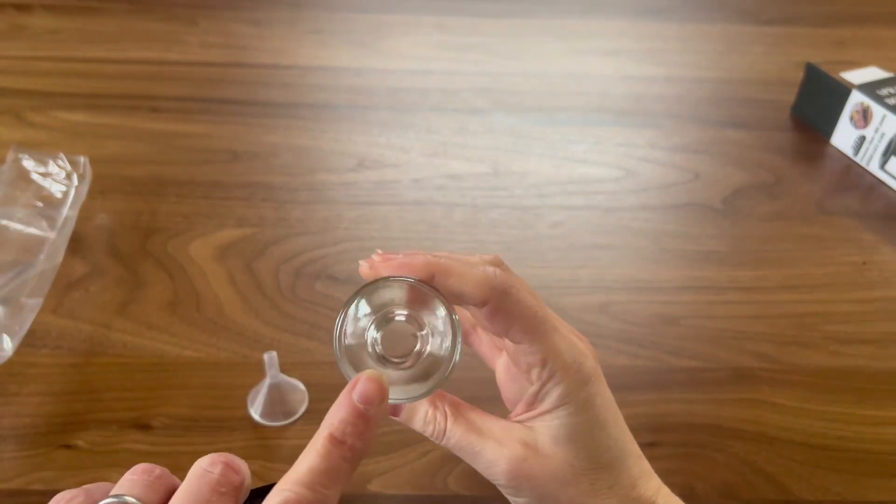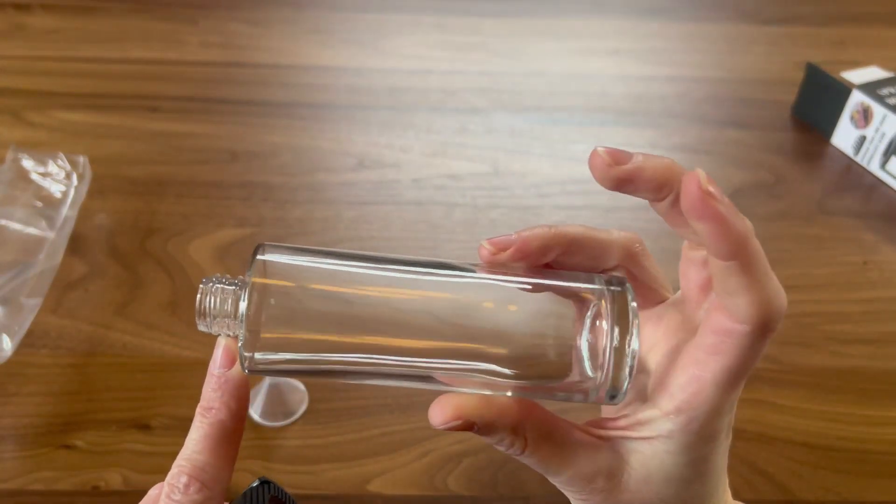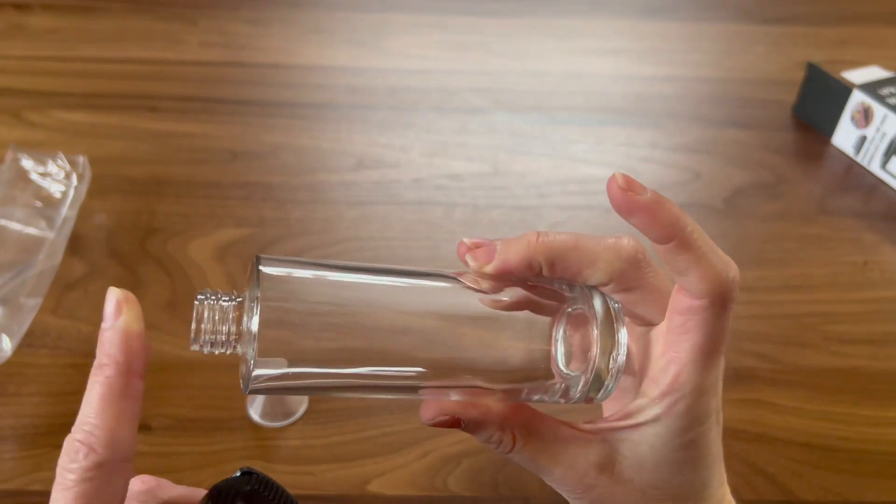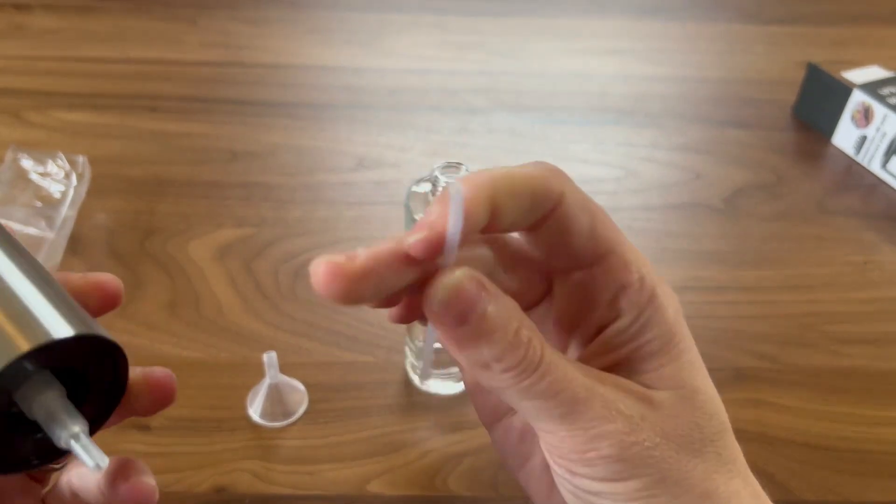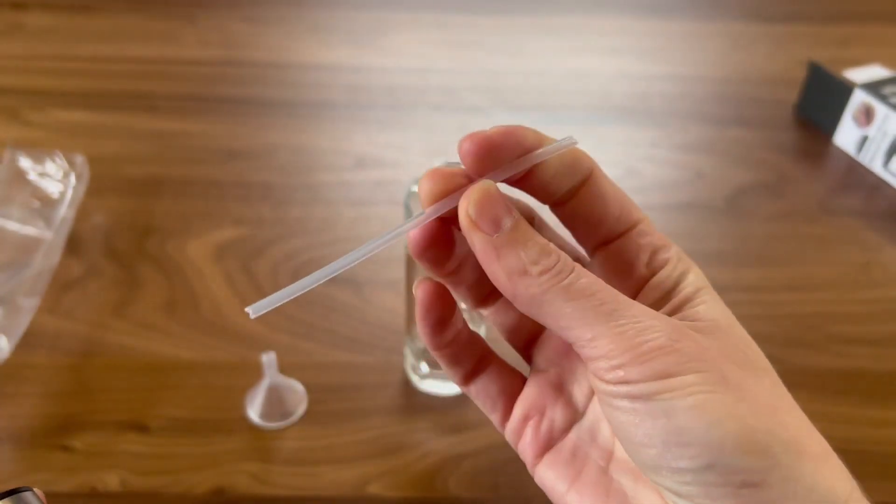So this won't be the easiest to clean without a bottle cleaner, but I do have one, so that won't be a problem. And then this piece should come apart—yes, this comes out. This is something you can just run some soap through, and mostly what I do to clean things like this is